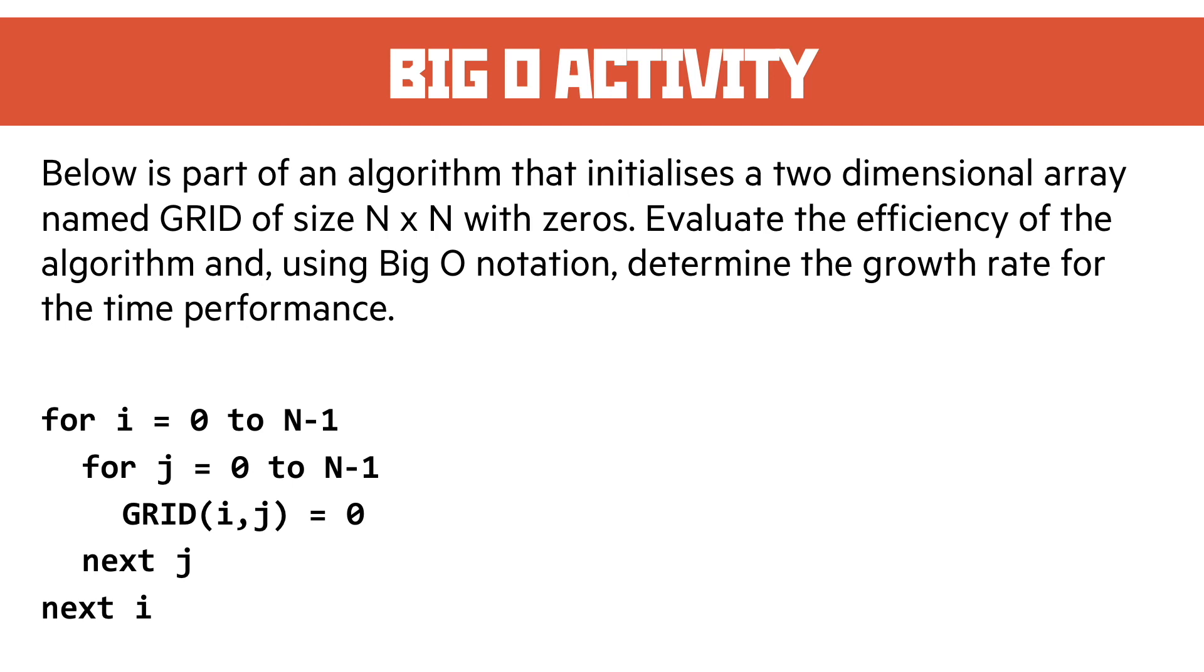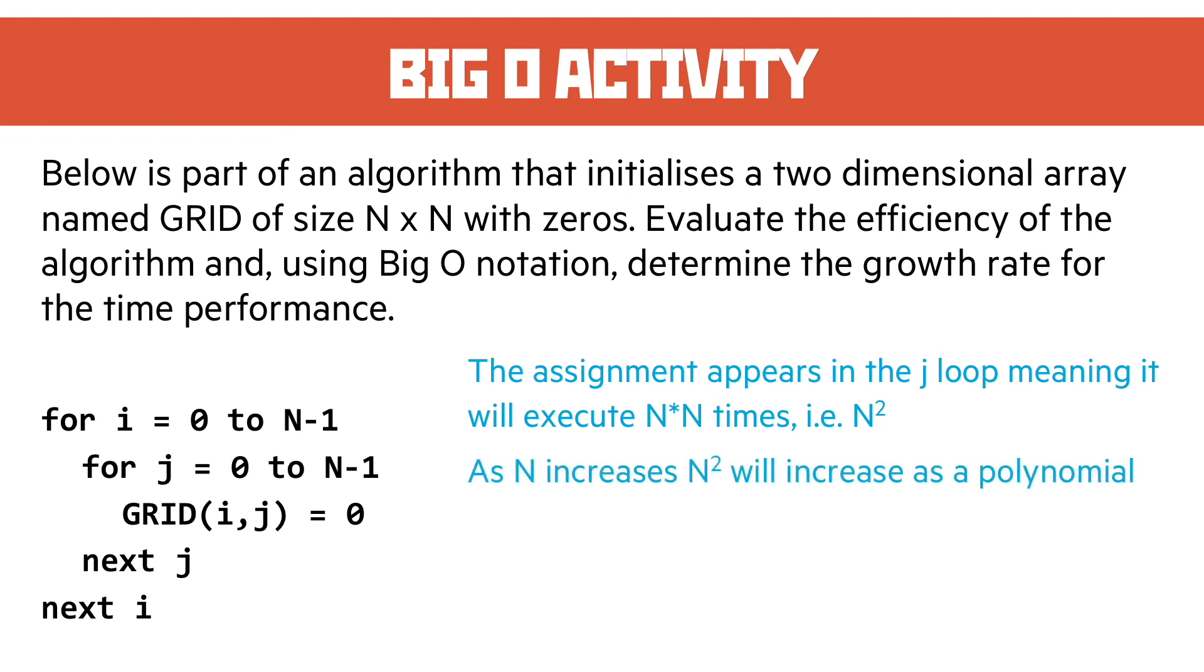We've got a for loop within a for loop, so it goes through every location in that grid. If we're doing N lots of N, that means we're executing it N times N times, in other words N squared. So as N increases, N squared will increase as a polynomial. Basically the Big O of this is N squared.